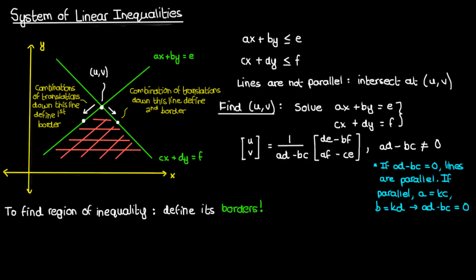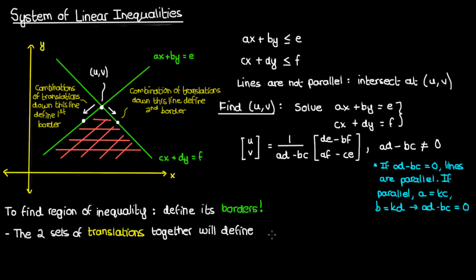Once we have the translations from the point of intersection that define our borders, we can combine those two translations to define our region of inequality. If we translate from the point of intersection down the direction of one line, then translate again down the direction of the other line, we will have a point in the region of inequality. Repeating this for every possible combination of translations allows us to find every single point in the region of inequality.